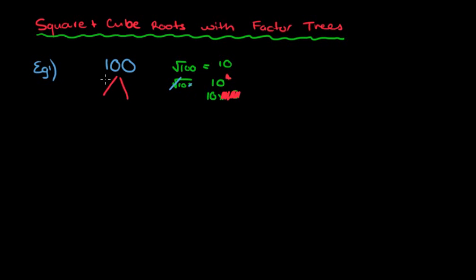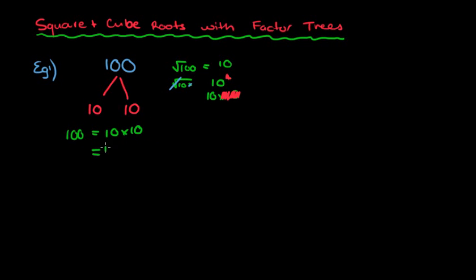Now, probably the most usual breakdown of 100 will be 10 times 10. And you might think — oh hold on, was my aim to get 10 times 10? And it was! So you could write here: equals 10 times 10, or 10 squared. And then you could simply write the answer: the square root of 100 equals 10.